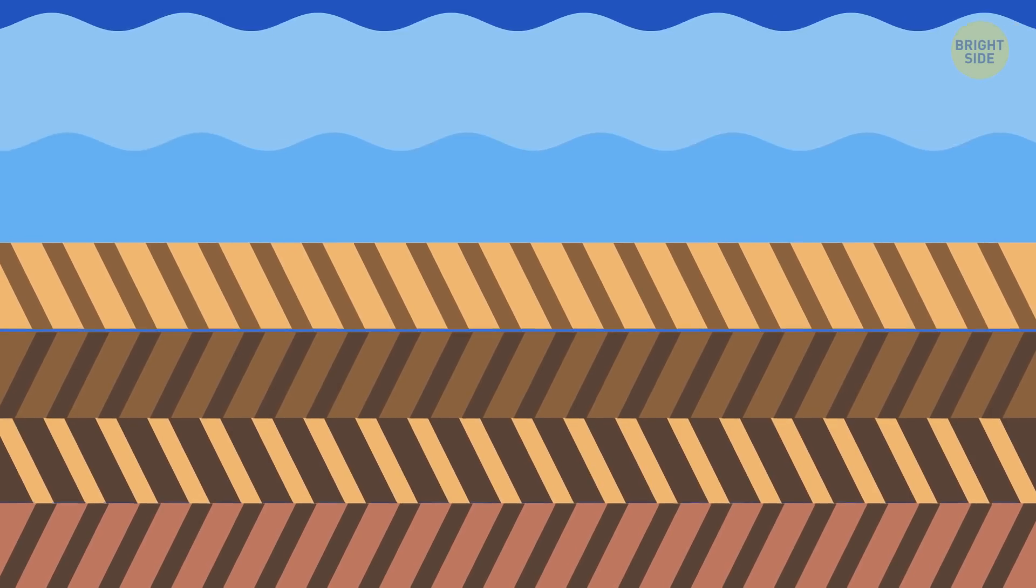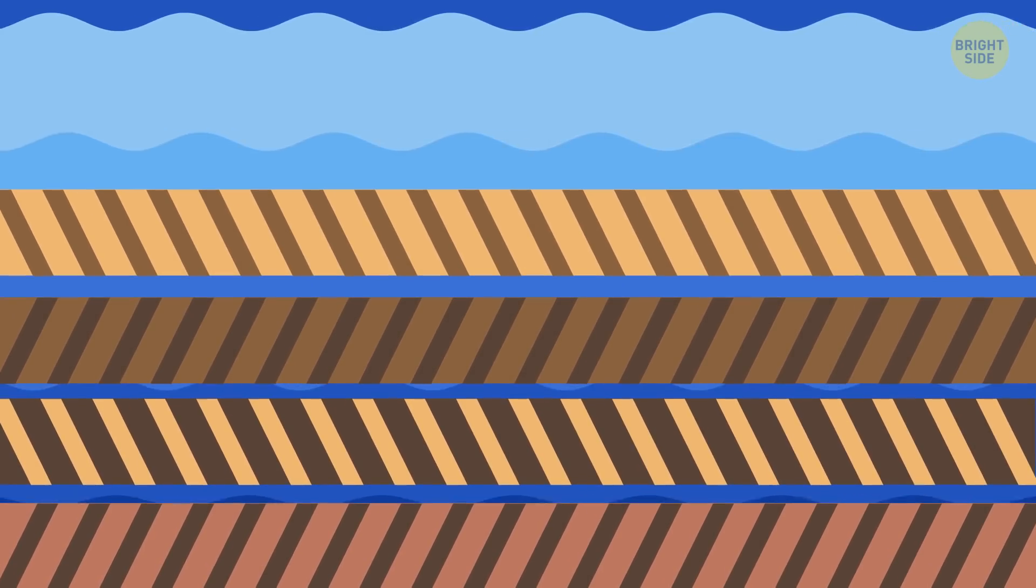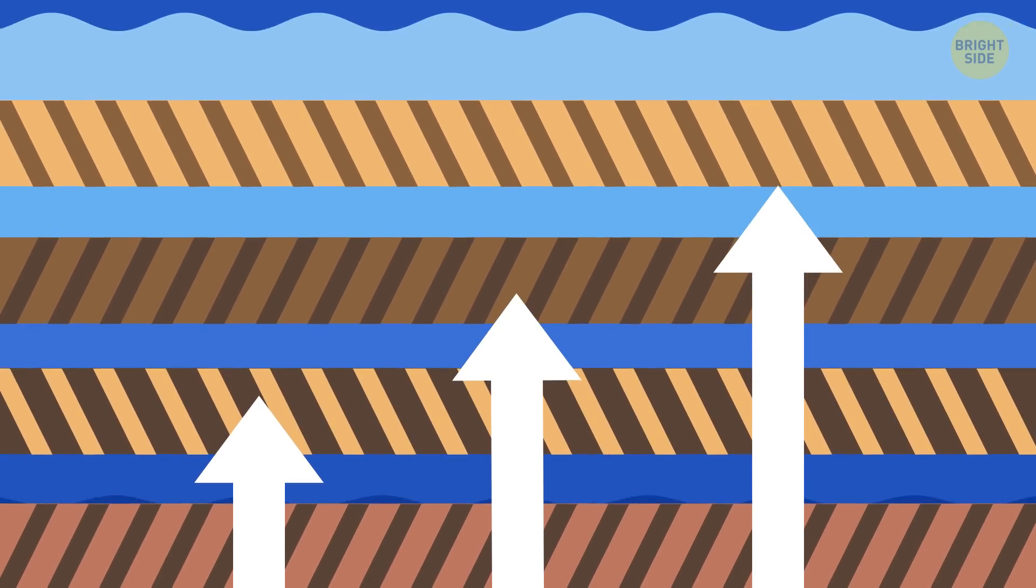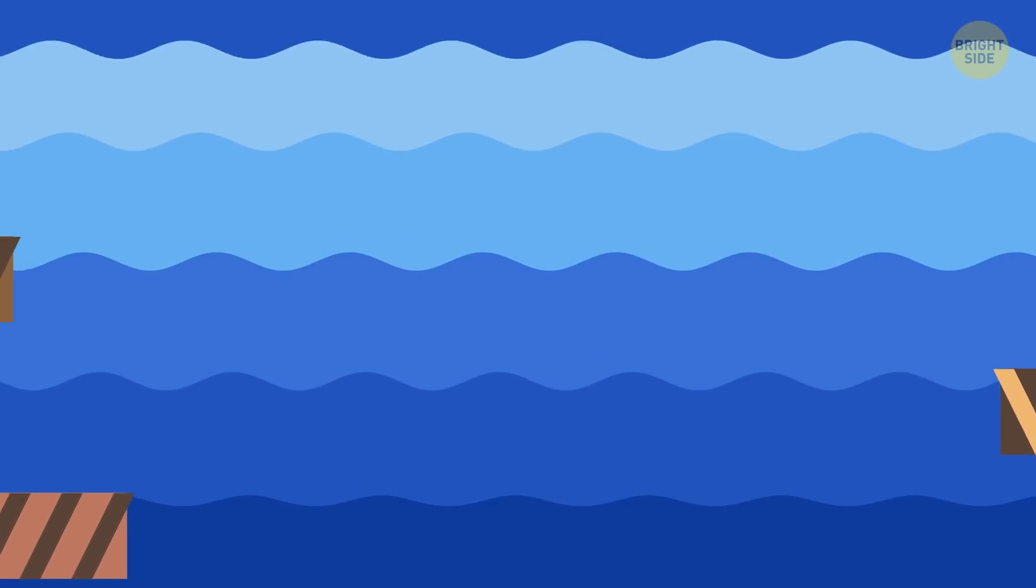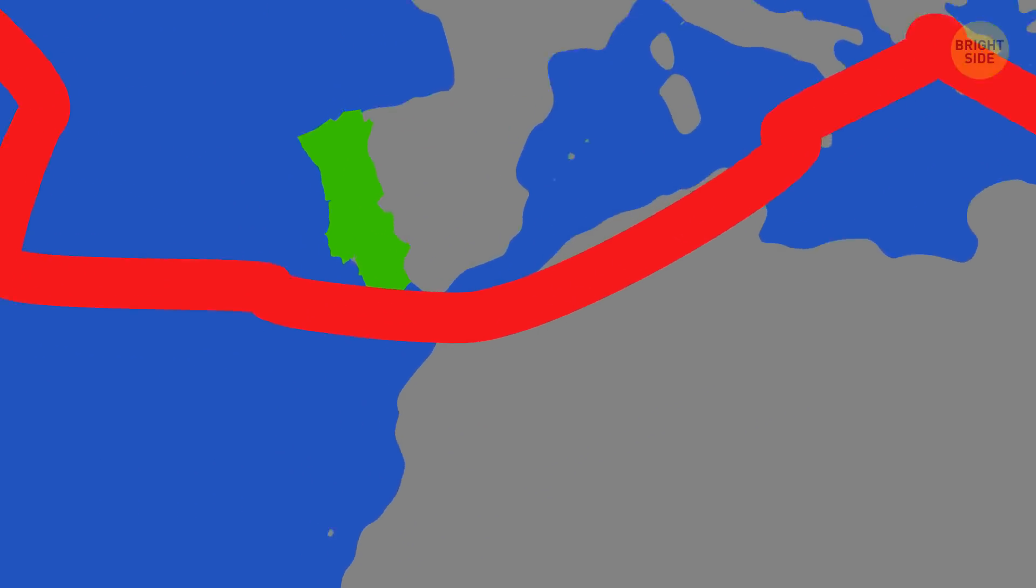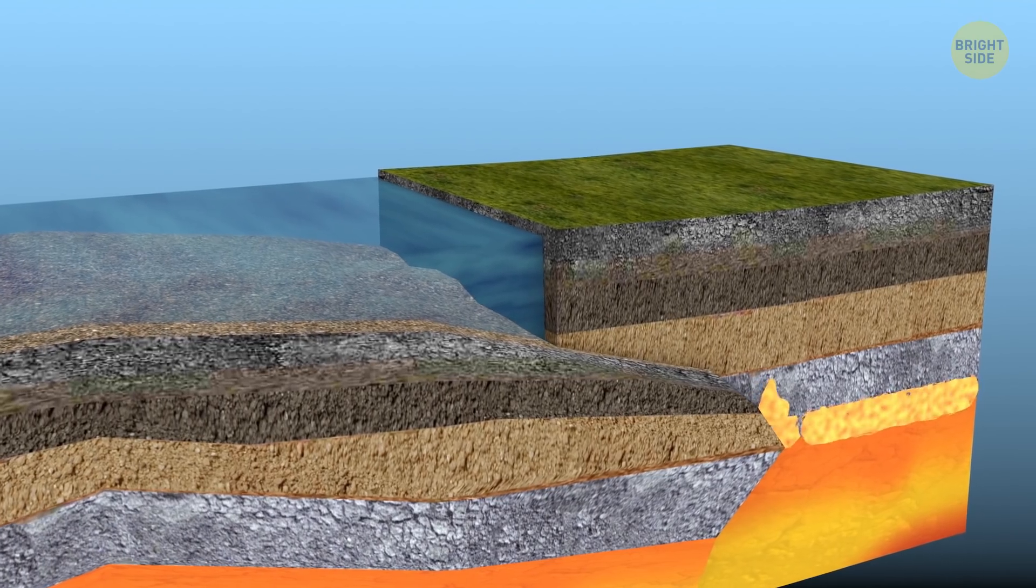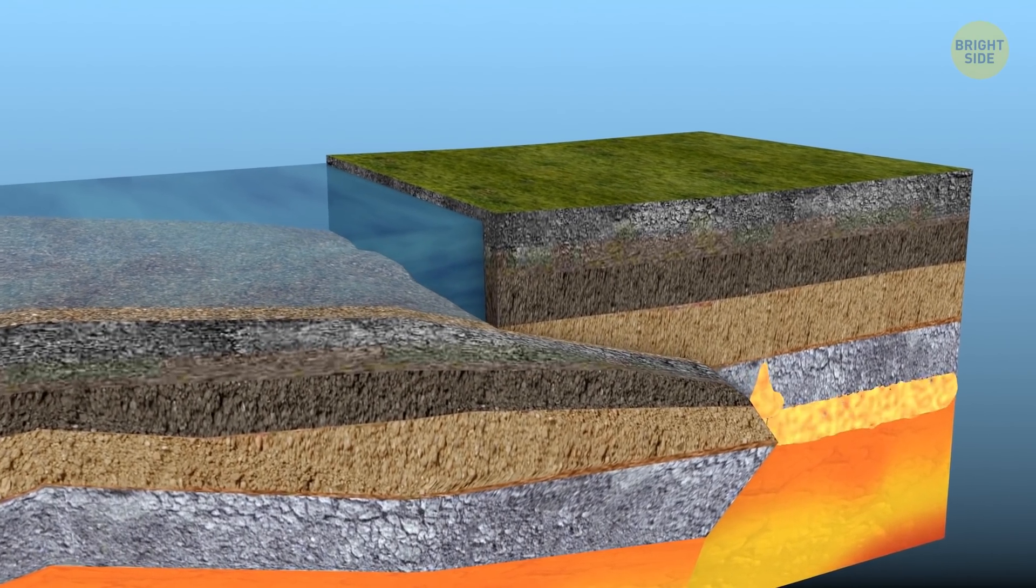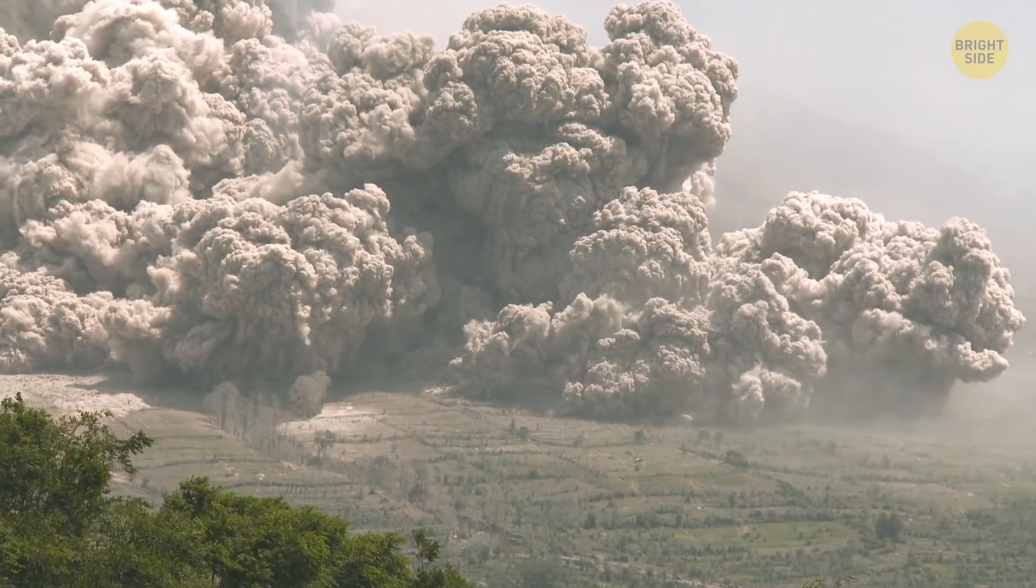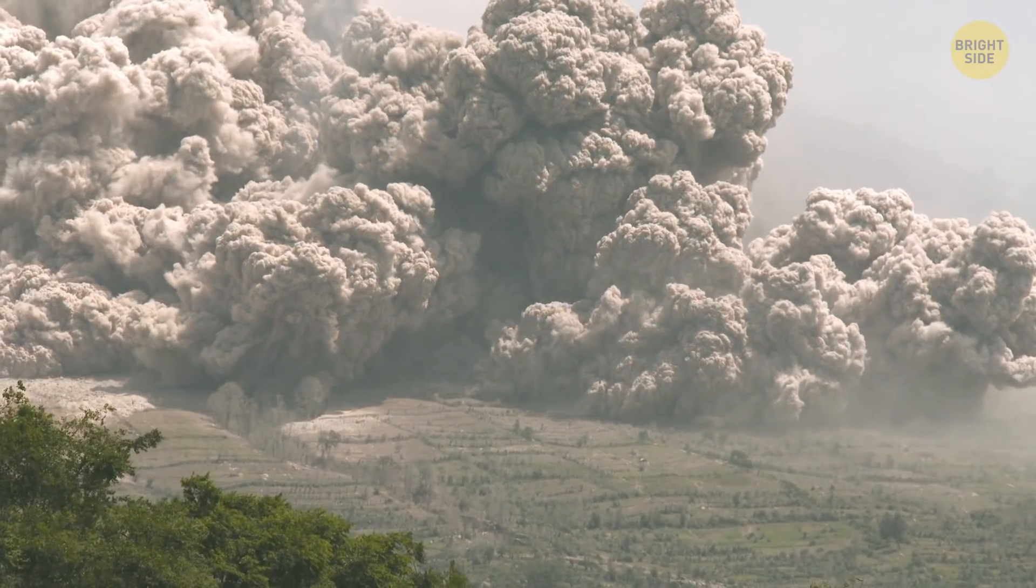The same thing happens when water gets between the layers of a tectonic plate. They have a different density, so they're naturally divided already. Water, in its turn, separates them even further, making the top layer slide off the bottom one. Given the size of the Eurasian plate, which Portugal is part of, such movement can be compared with two tectonic plates going one under the other. And like I said a bit earlier, when this happens, earthquakes are bound to occur.